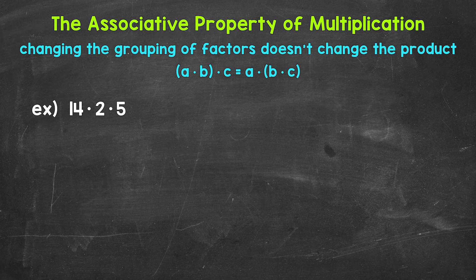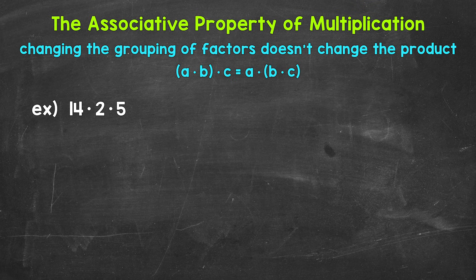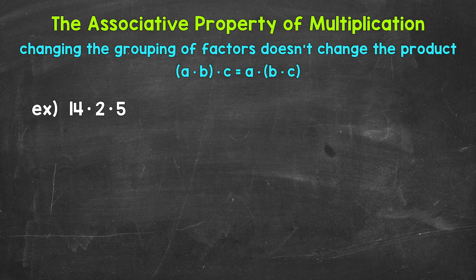When it comes to the associative property of multiplication, think grouping. The grouping of factors doesn't change the product. Factors are the numbers being multiplied, and the product is the answer to a multiplication problem. So changing the grouping doesn't change the answer.